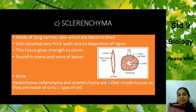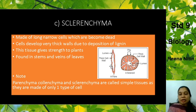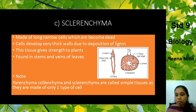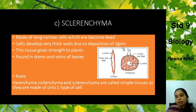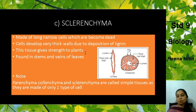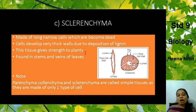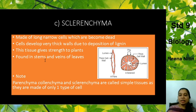Now we come to the third type — Sclerenchyma. What is Sclerenchyma made up of? They are made up of long, narrow cells which have become dead. For example, the fiber of the coconut — you have all seen the fiber of the coconut — that is made up of Sclerenchyma cells. Cells develop very thick walls due to deposition of lignin. This tissue gives strength to the plants. They are found in the stems and in the veins of the leaves, wherever they need strength to stand.